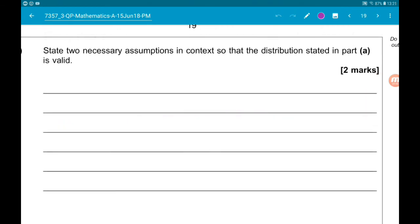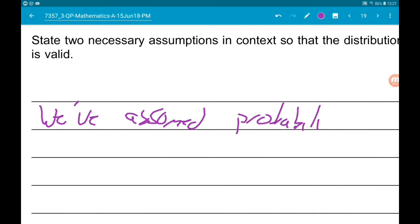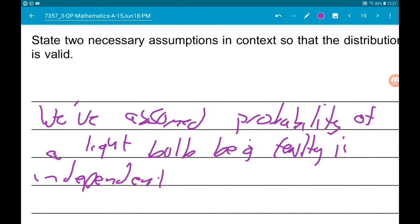Okay, then the final part wants us to state 2 necessary assumptions in context that we've made so that the distribution stated in part A is valid. So first up, binomial distribution only works for independent events. So we've assumed the probability of a light bulb being faulty is independent of others.